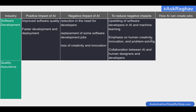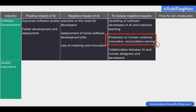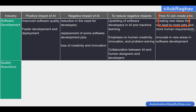What we can do to reduce or curb these negative impacts: one direct solution is to upskill our workforce so they can work with AI and machine learning, and we should focus more on human creativity, innovation, and problem solving. We must make sure humans play a very important role, and we can do collaboration between AI and human designers and developers. On how AI can create jobs — AI can give us new ideas, suggestions, and options, leading to more jobs and more human requirements, and innovation in new areas of software development.